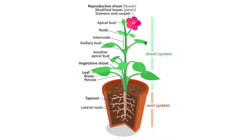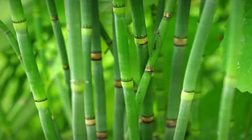Tiny root hairs growing out from roots absorb water and dissolved minerals from the soil. These substances pass into xylem tissue in the roots and are carried to the rest of the plant. Roots also help support and anchor the plant in the soil. Some roots store extra sugar that is made in the leaf during photosynthesis.